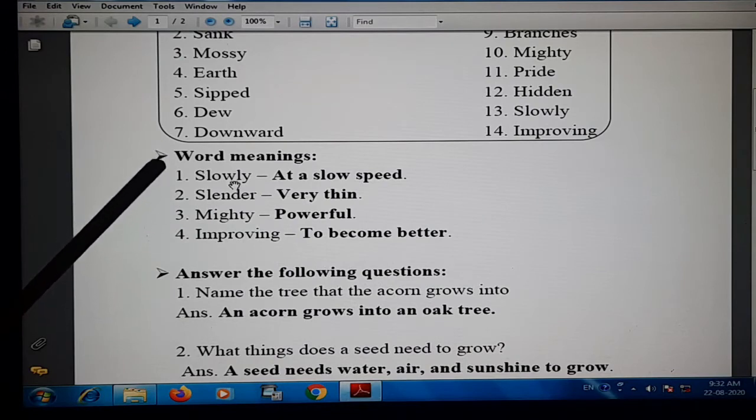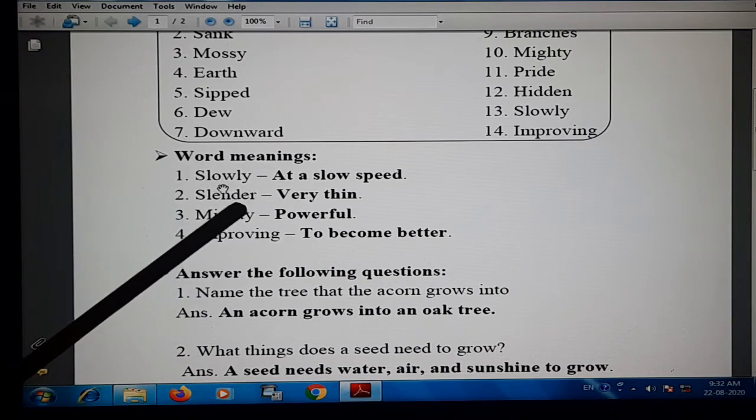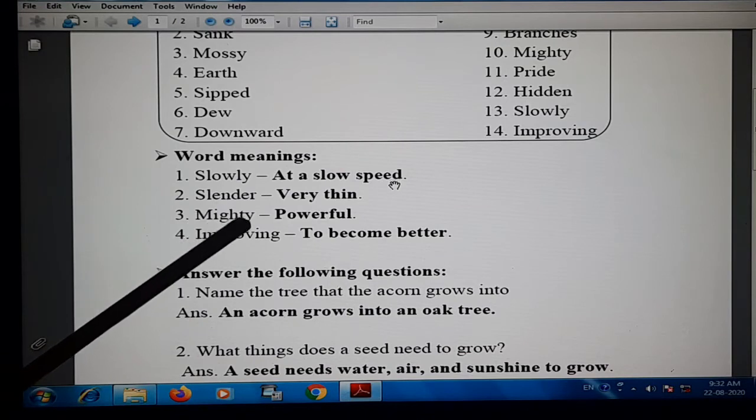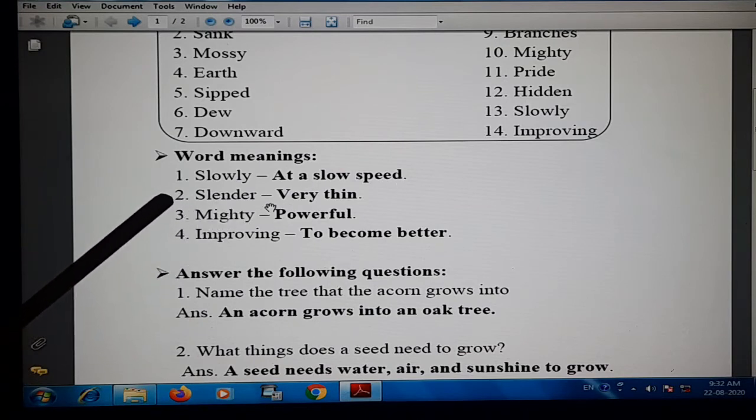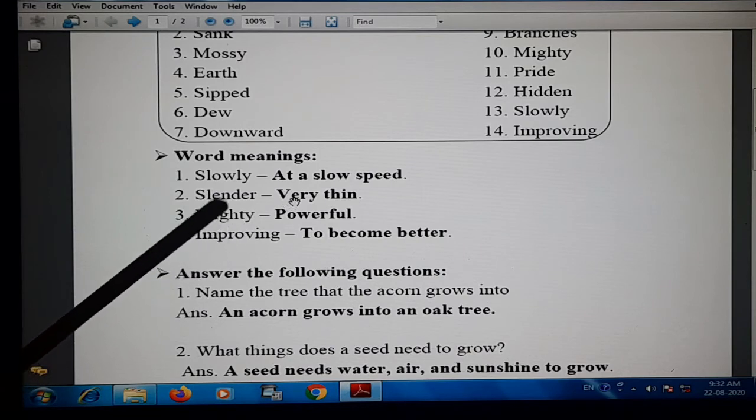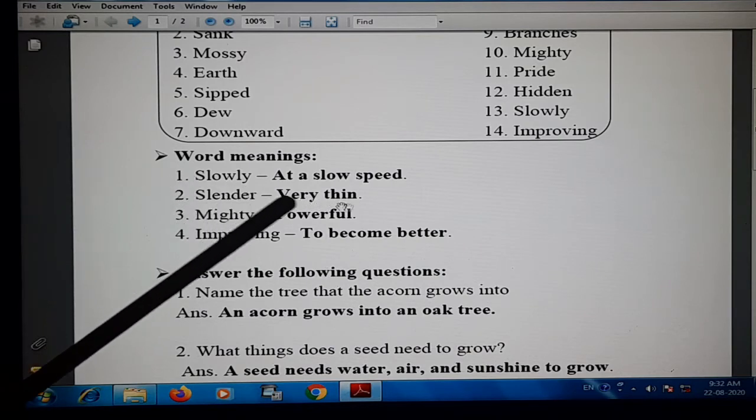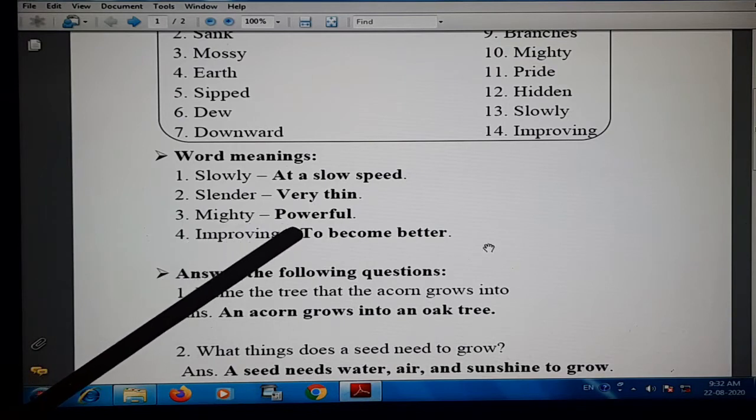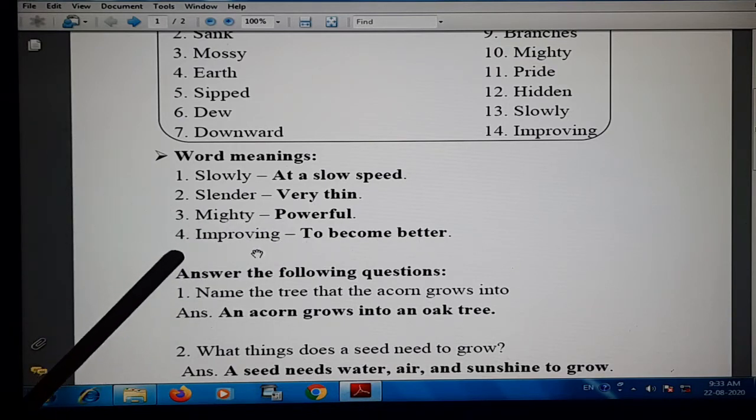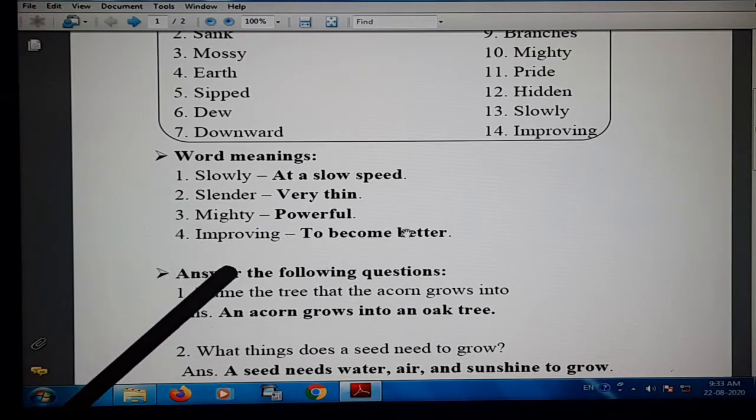Then next exercise is word meanings. First one is slowly. Slowly means at a slow speed, gradually. Number two, slender, very thin. Number three, mighty. Mighty means powerful. We discussed that in new words. Number four, improving, to become better.